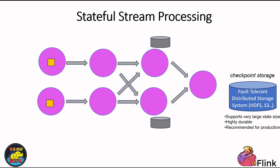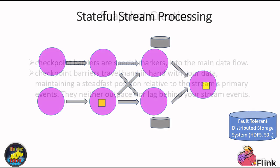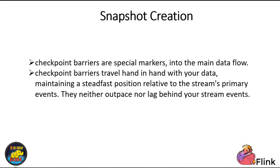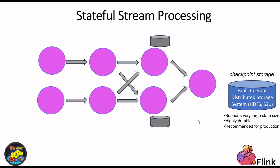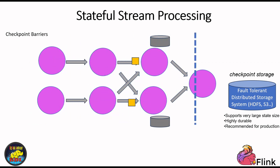Now let's unravel how Flink's snapshot mechanism operates when running your Flink program. Picture this: your Flink program is in full swing, events are flowing, and data is being retrieved from the state, modified, and results are generated. At regular intervals, Flink introduces checkpoint barriers — these are special markers — into the main data flow. Crucially, these checkpoint barriers travel hand-in-hand with your data, maintaining a steadfast position relative to the stream's primary events. They neither outpace nor lag behind your stream events.